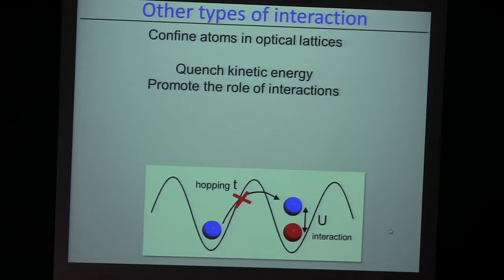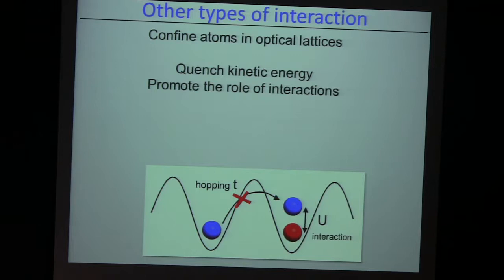There are other types of strong interactions that we can induce. You can quench the kinetic energy and promote the role of interactions. This is done in the famous Hubbard model, where the two ingredients are: these atoms now live on the lattice, and the lattice is deep. So in this limit, you can describe the motion as just a hopping matrix element that is allowed. And then there is an interaction if two unlike fermions are on the same lattice site.